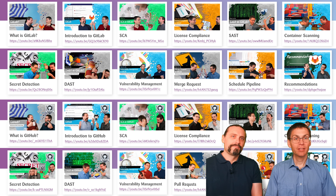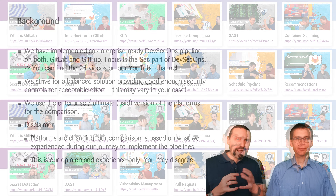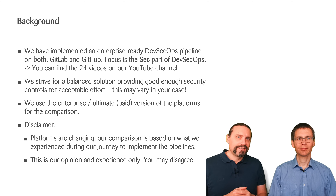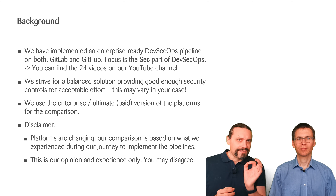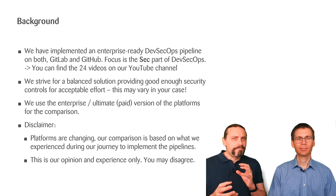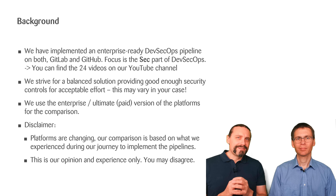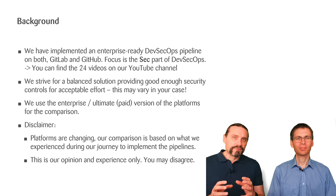So we think it's an interesting approach to compare the platforms and give you our impressions. As Paddy said, we have implemented an enterprise-ready DevSecOps pipeline with both GitLab and GitHub. During these 24 videos we concentrated on the DevOps part but especially on the security part. We always strived for a balanced solution which provided good enough security on both platforms, though this varied quite a lot from case to case and from platform to platform. What is important to say is that in your case this balanced security can be completely different.